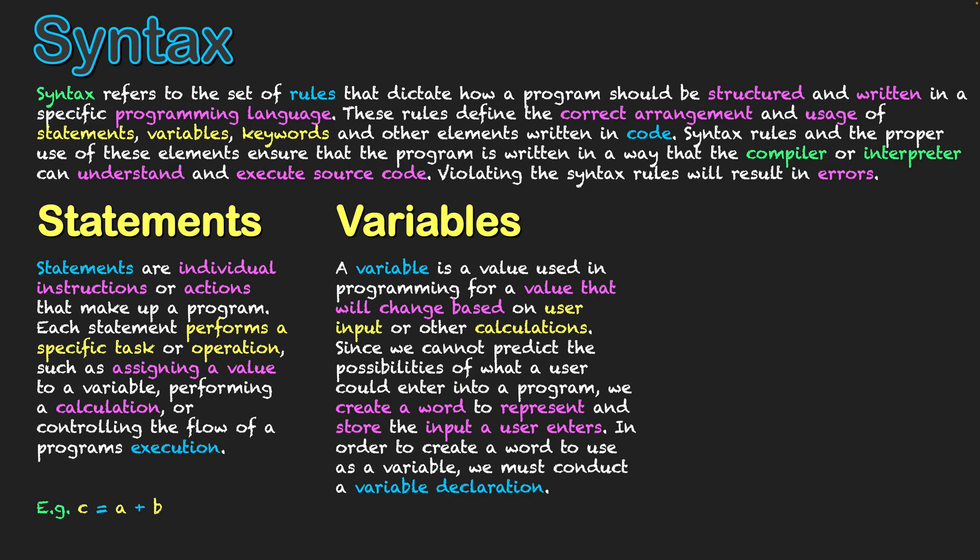Since we cannot predict the probability of what a user could enter—because there's infinite things they could enter—we need to create a word to represent and store the input that a user enters in that scenario. Also, these might be used for calculations for more data later on, and we can't predict that either. In order to create a word to use as a variable, we must do what's known as a variable declaration.